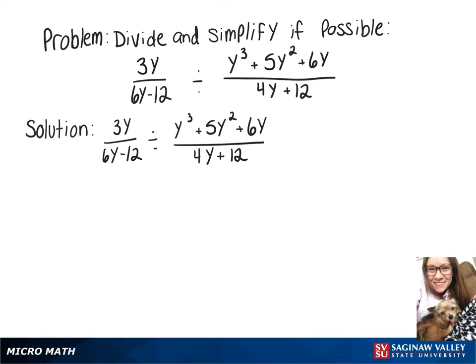We're going to divide these expressions. So the first thing we need to do is multiply by the reciprocal. So we'll have 3y over 6y minus 12 times 4y plus 12 over y cubed plus 5y squared plus 6y.